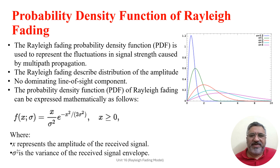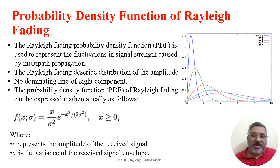The probability density function of Rayleigh fading may be expressed mathematically as follows: f(x, σ), where x represents the amplitude of the received signal and σ represents the variance of the received signal envelope. It is equal to (x / σ²) · e^(−x² / 2σ²), where x represents the amplitude of the signal and must be greater than or equal to 0.